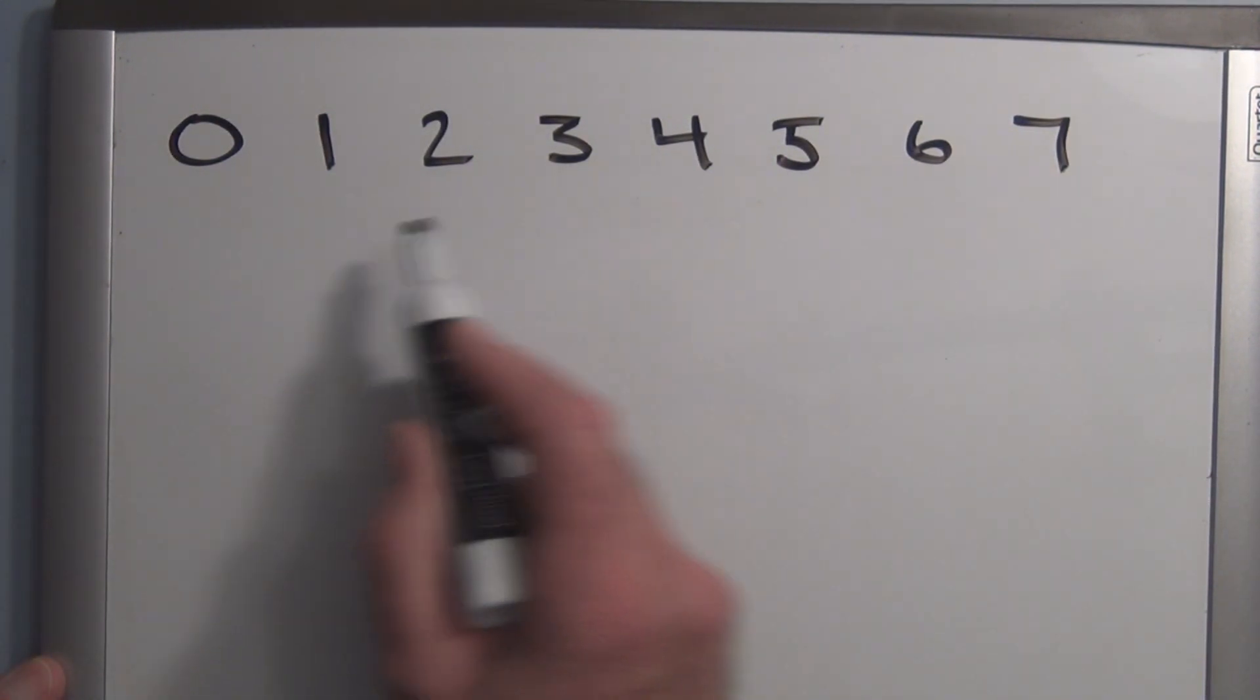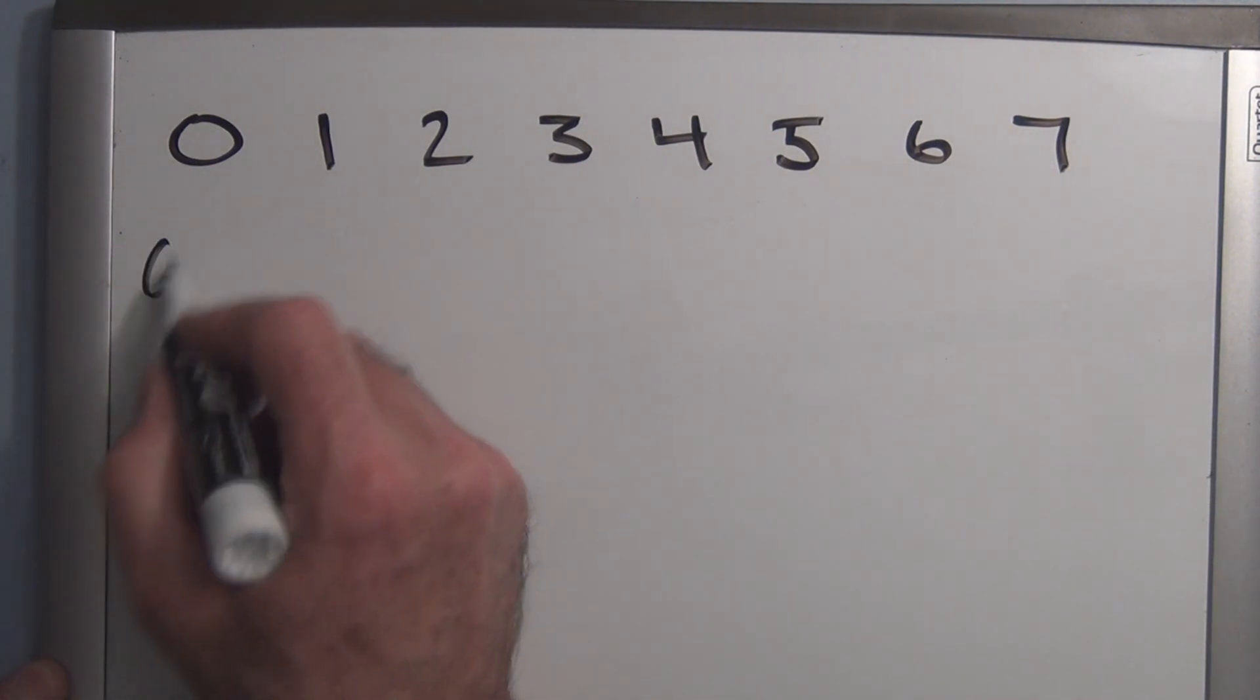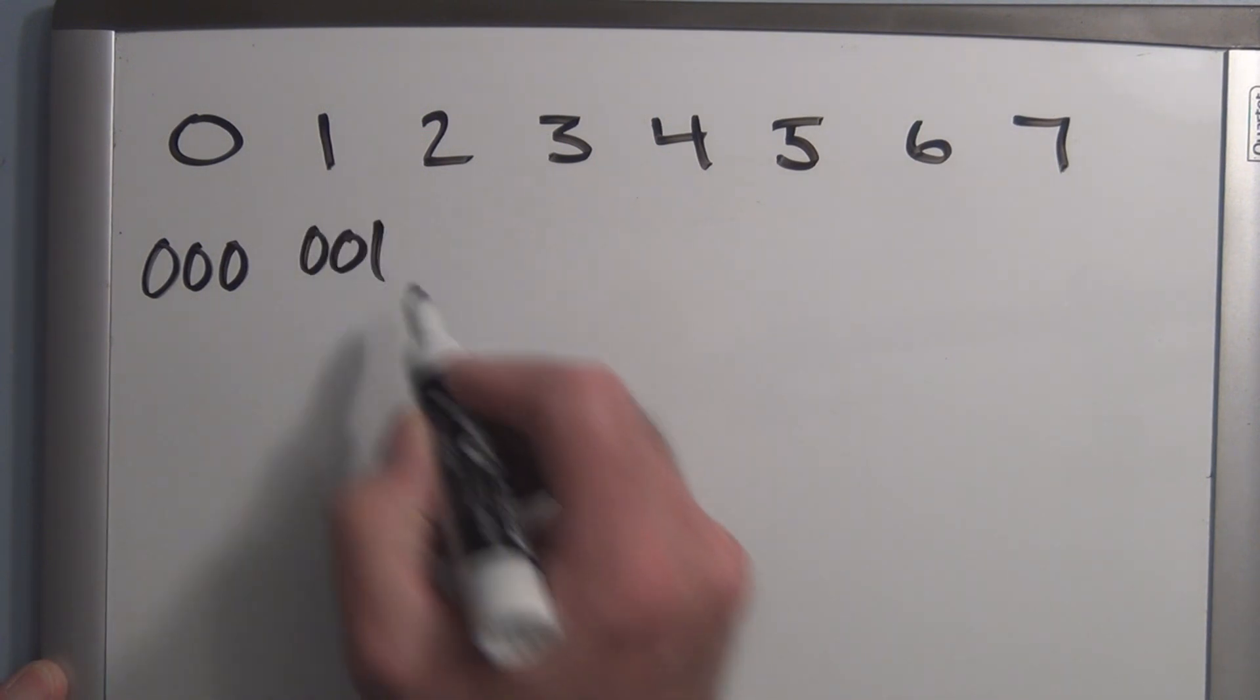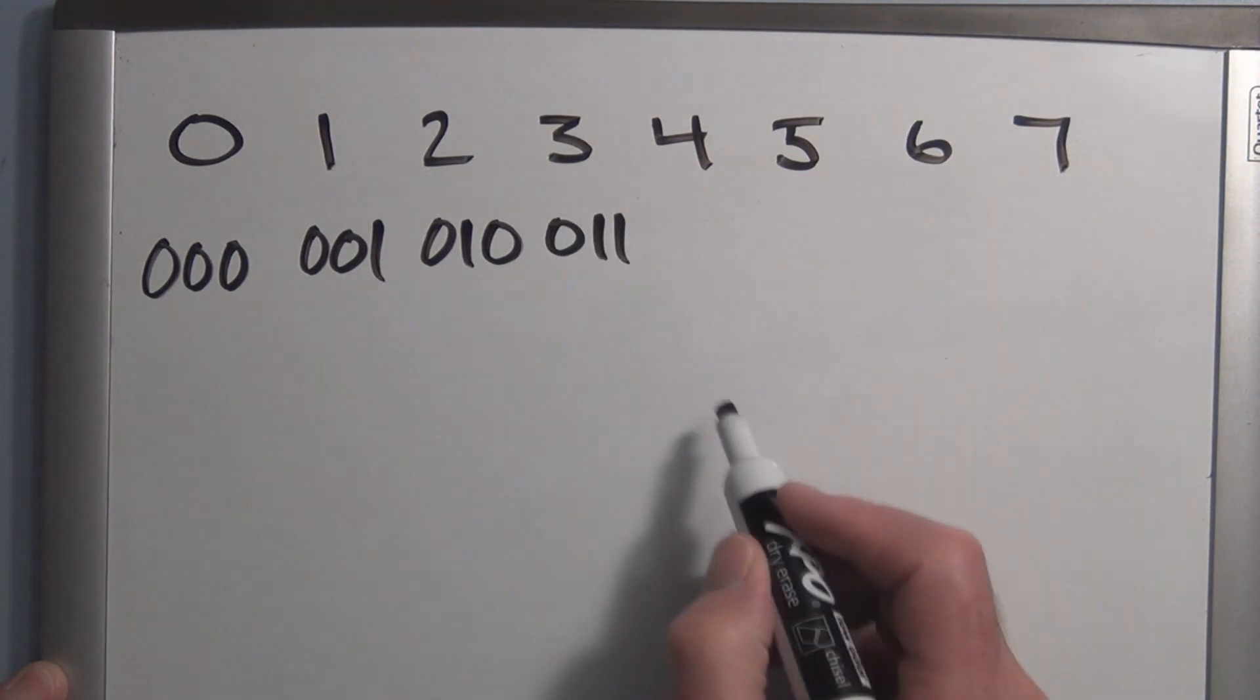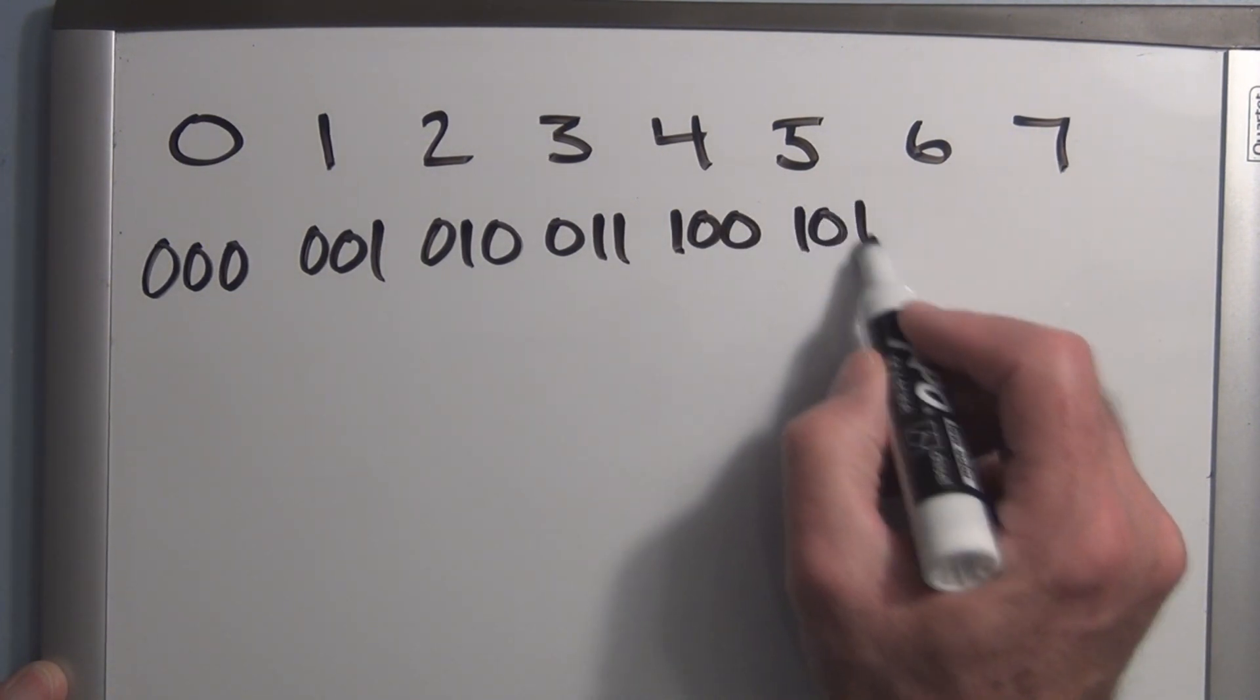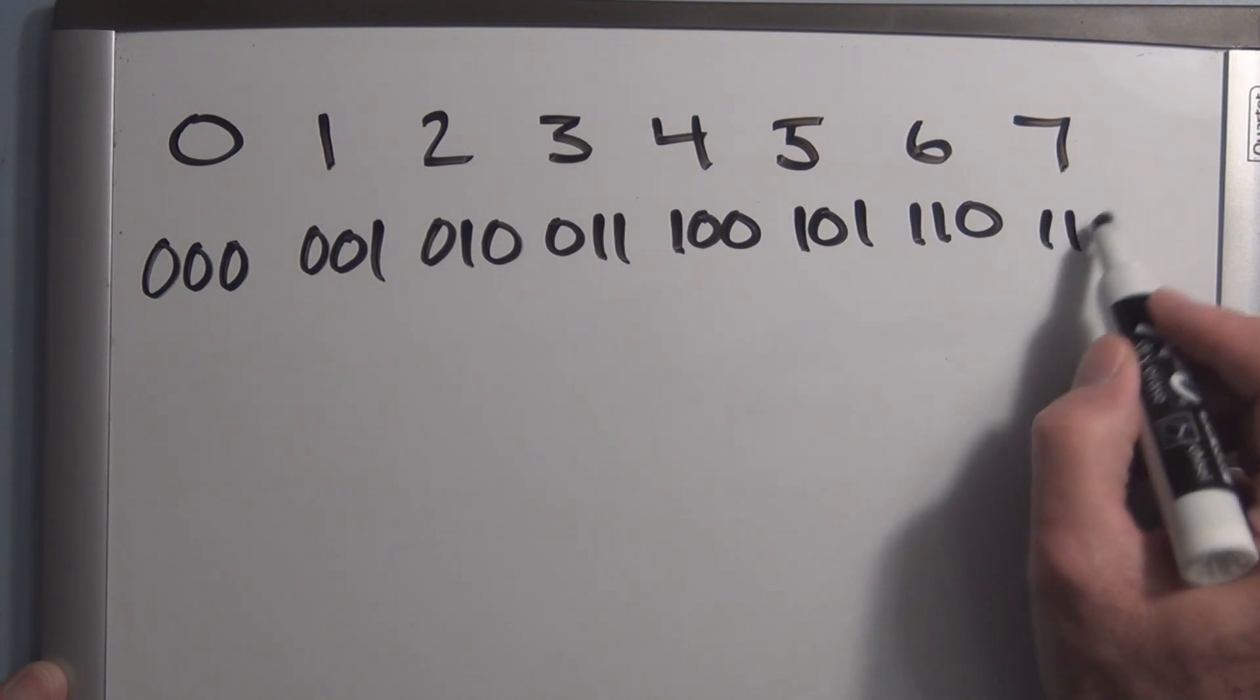So if we individually represent these in binary, 0, of course, would be 000. 1 is 001, 2 is 010, 3 is 011, 4 is 100, 5 is 101, 6 is 110, and 7 is 111.